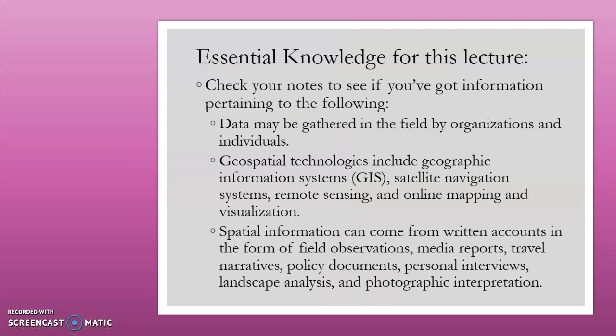For your essential knowledge review, check your notes for the following: Data may be gathered in the field by organizations or individuals — for example, if you walk around with a cell phone you gather tons of geographic data if you use location services. Geospatial technologies include geographic information systems, satellite navigation systems, remote sensing, and online mapping and visualization. Spatial information can come from written accounts in the form of field observations, media reports, travel narratives, policy documents, personal interviews, landscape analysis, and photographic interpretation. Field observations are observations done by geographers out in a specific area looking for generally specific things — for example, going to the Midwest United States to see how land is used by farmers, which types of crops they're growing, whether they're using mixed agricultural methods, or whether they're simply dairy farms.